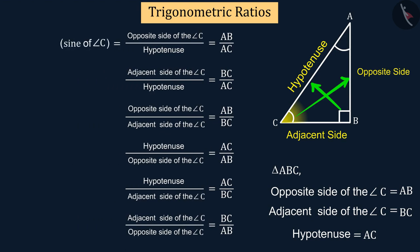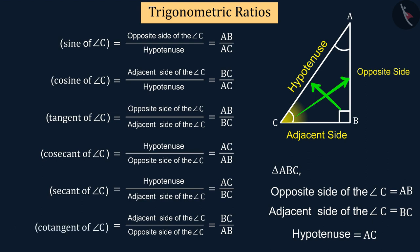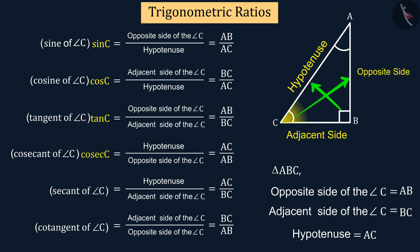Now if we study the obtained ratios with respect to angle C, we get these six trigonometric ratios, which we call sine of angle C, cosine of angle C, tangent of angle C, cosecant of angle C, secant of angle C, and cotangent of angle C. We show these with sin C, cos C, tan C, cosec C, sec C, and cot C.